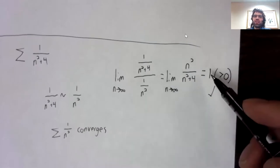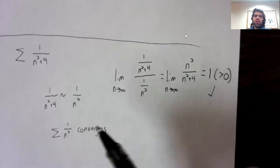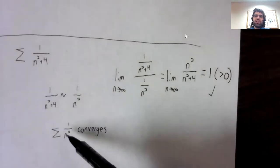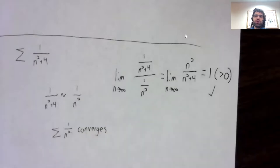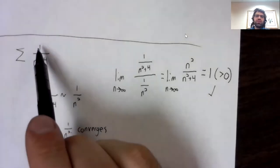One is a positive number. So this series and this series either converge or diverge together. And because this converges, so does this.